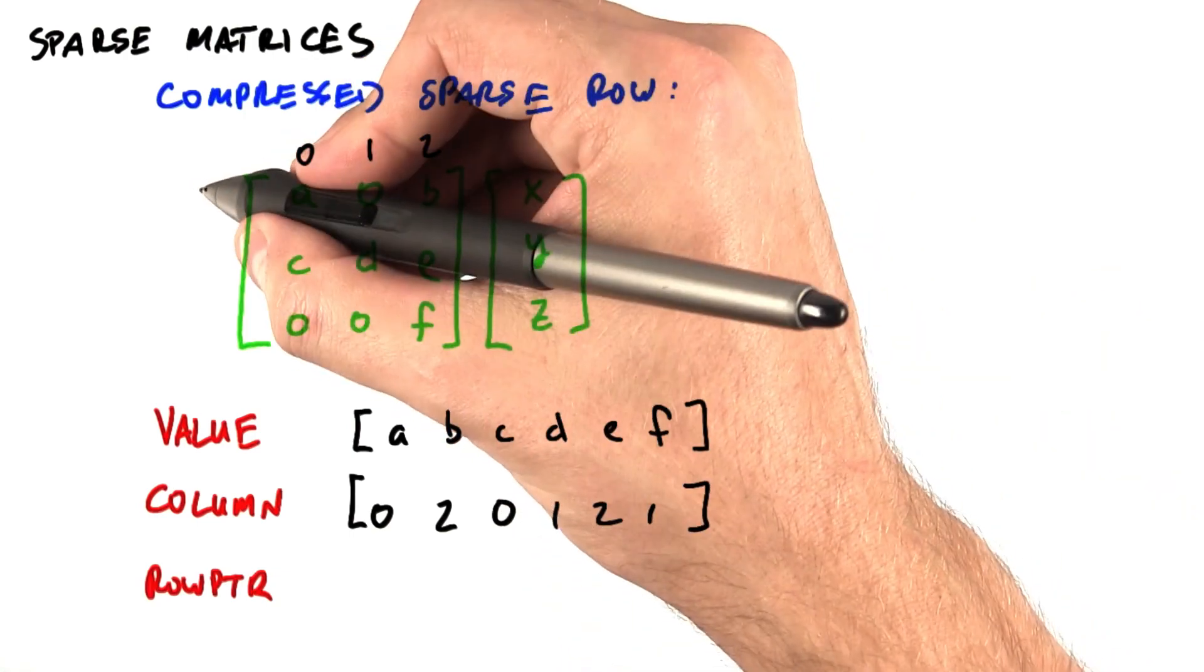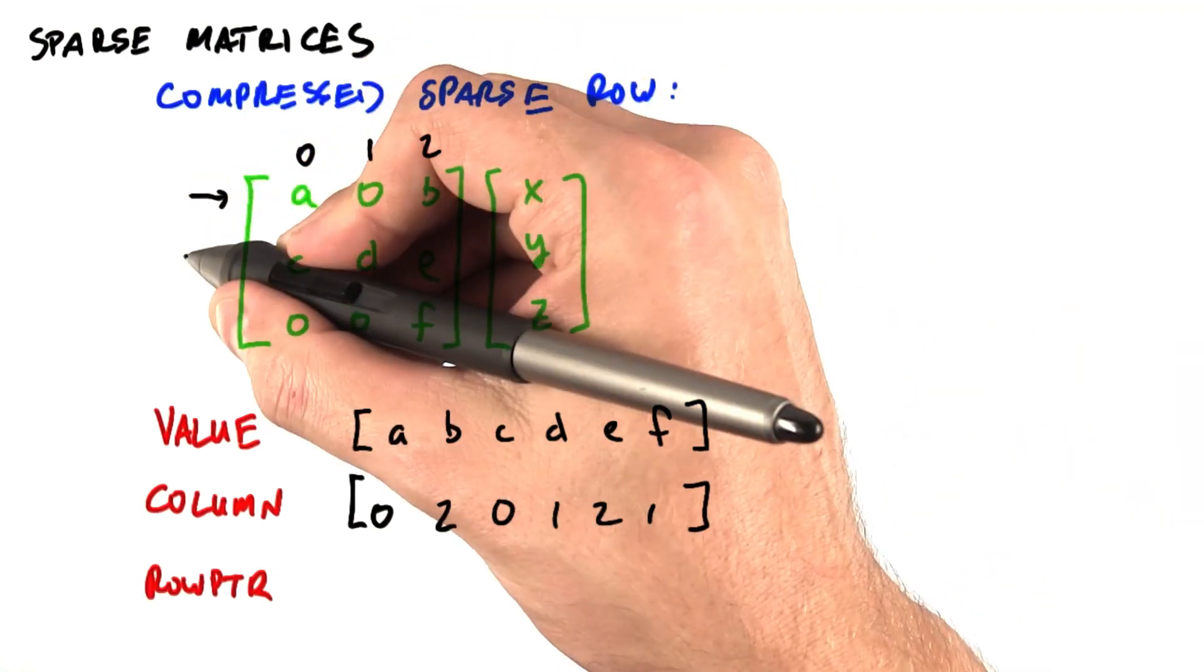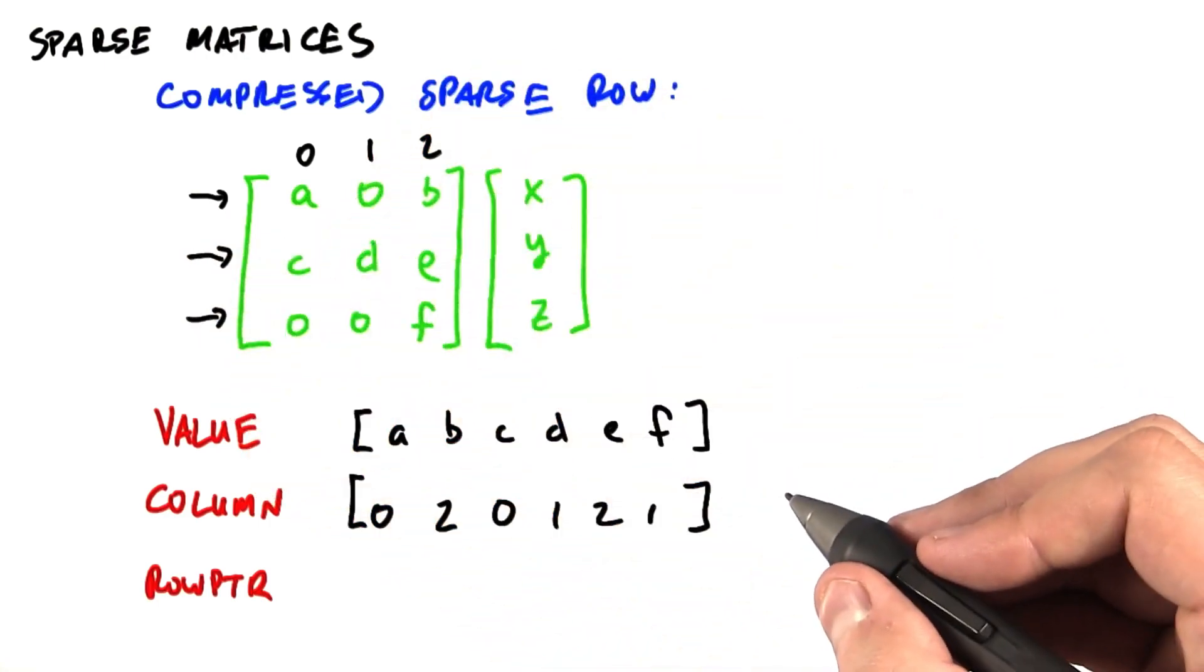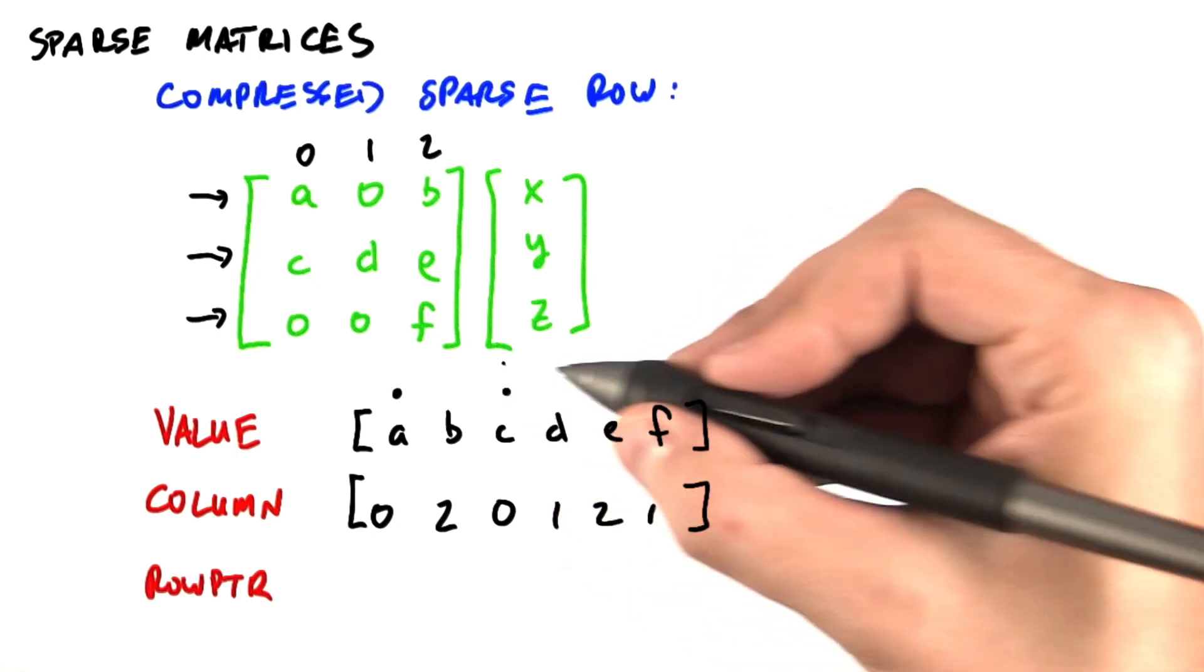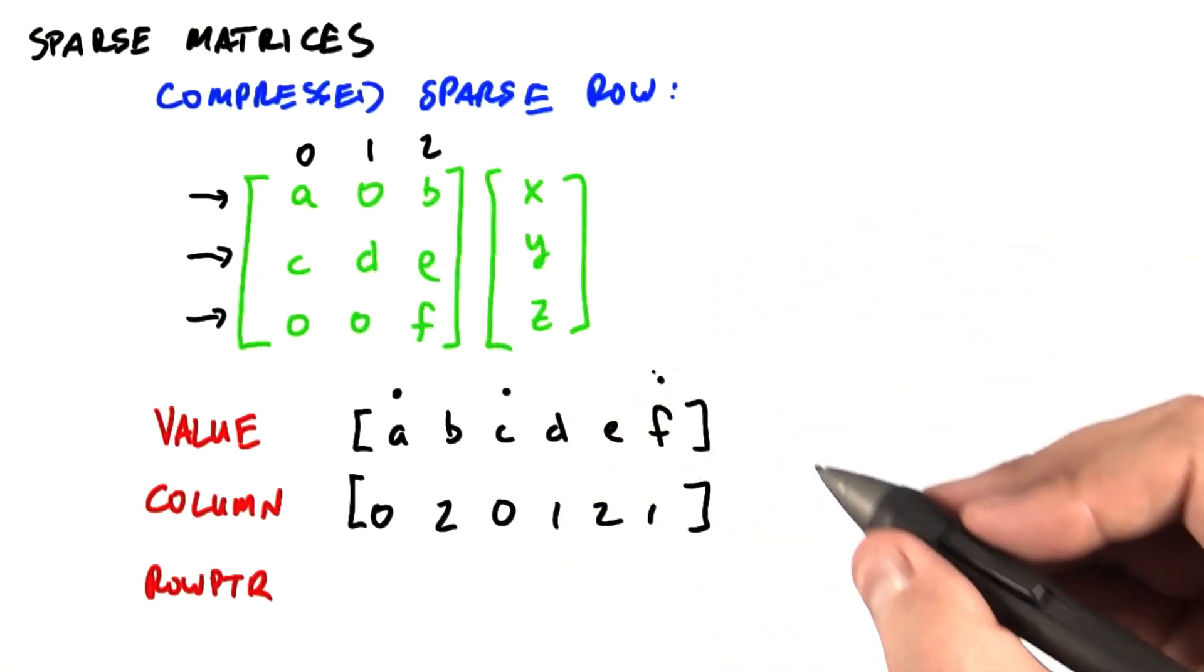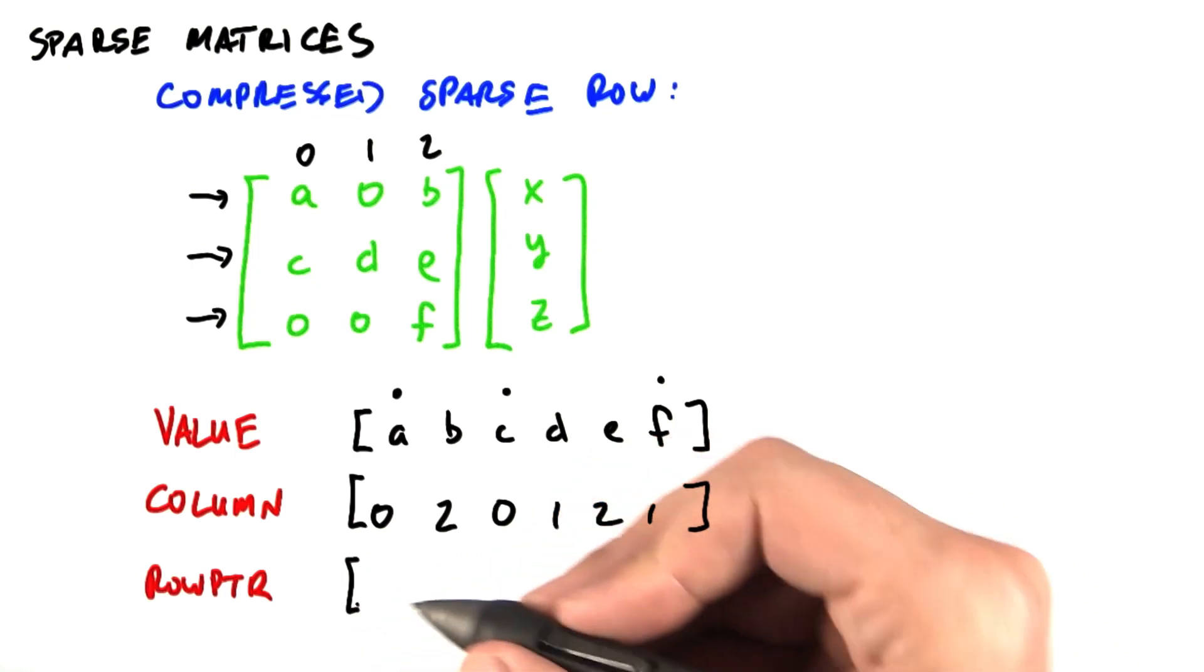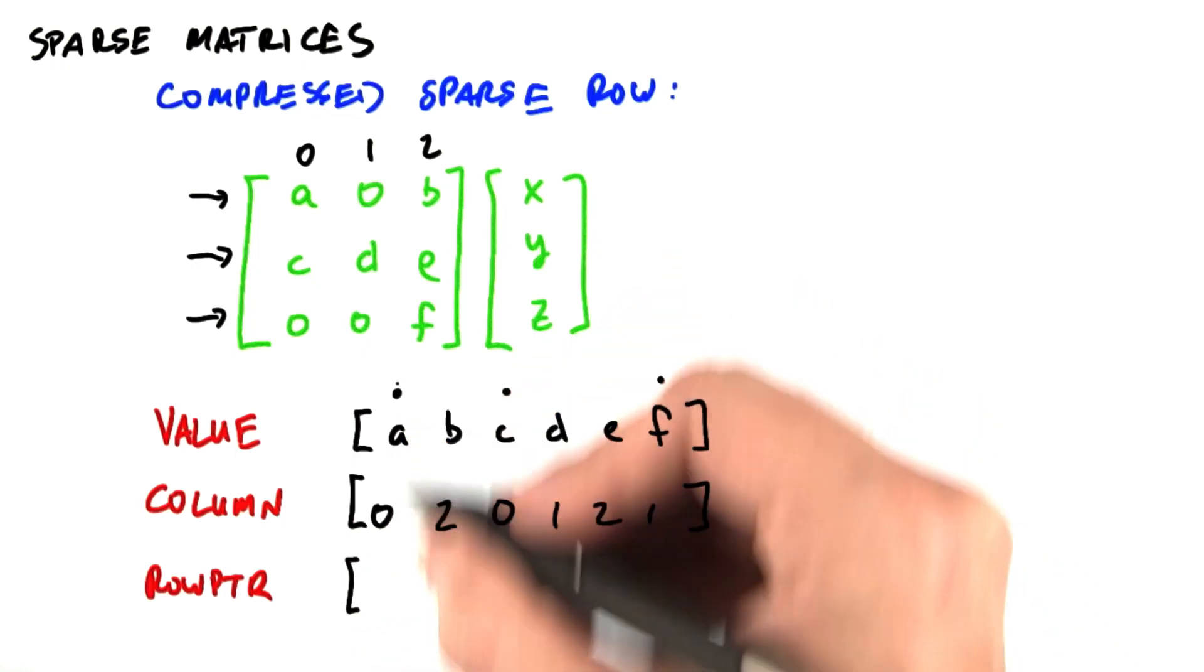Finally, we have to indicate at which element each one of these three rows begin. The three rows begin with values A, C, and F. What we're going to write in the row pointer is that value A is at index 0,